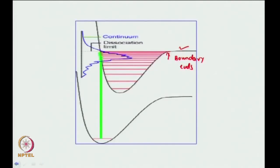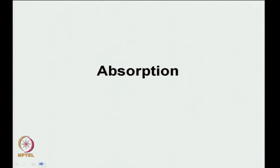That was about Franck-Condon overlap — whether you look at an absorption spectrum or a fluorescence spectrum. In many cases, the fluorescence spectrum is a mirror image of the absorption spectrum. Now let us talk about the optical technique known as absorption spectroscopy. The basic equation in absorption is the Lambert-Beer's law. Let us look at that Lambert-Beer's law quickly.